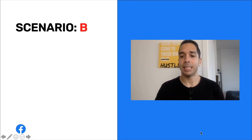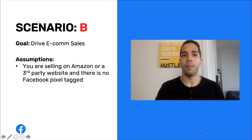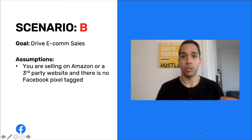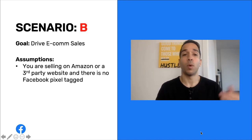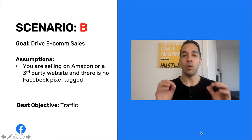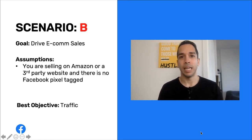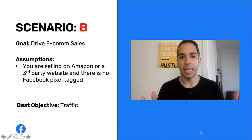Now let me give you a different scenario — Scenario B. You have the same goal of selling a product online, but you're not selling on a platform you own. Let's say you're using Amazon to sell your product and you're not able to tag that third-party website with a Facebook pixel. In this situation, you're going to want to use a traffic objective, because in order to run a conversion campaign you need to tag the website where the conversion is happening. If you can't do that, Facebook and that website can't communicate, so no optimization can be made.